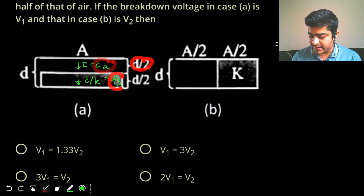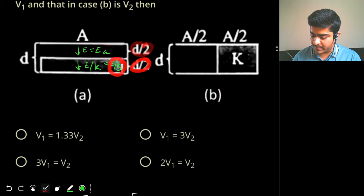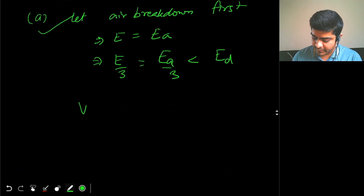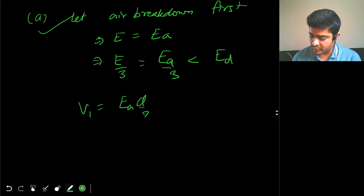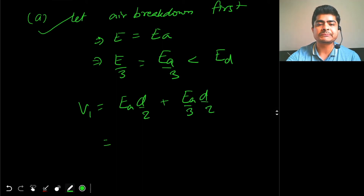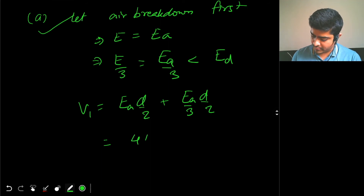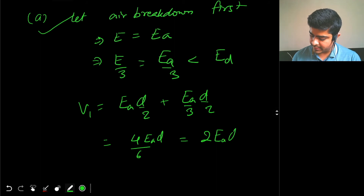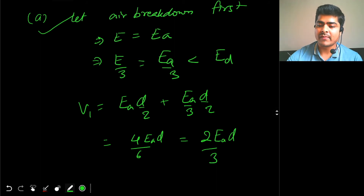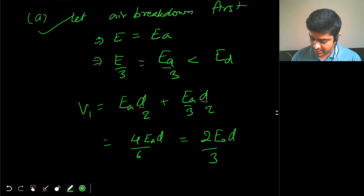With E = E_A at breakdown, the voltage V1 is: V1 = E_A × (D/2) + (E_A / 3) × (D/2). This gives V1 = (4 × E_A × D) / 6 = 2·E_A·D / 3.